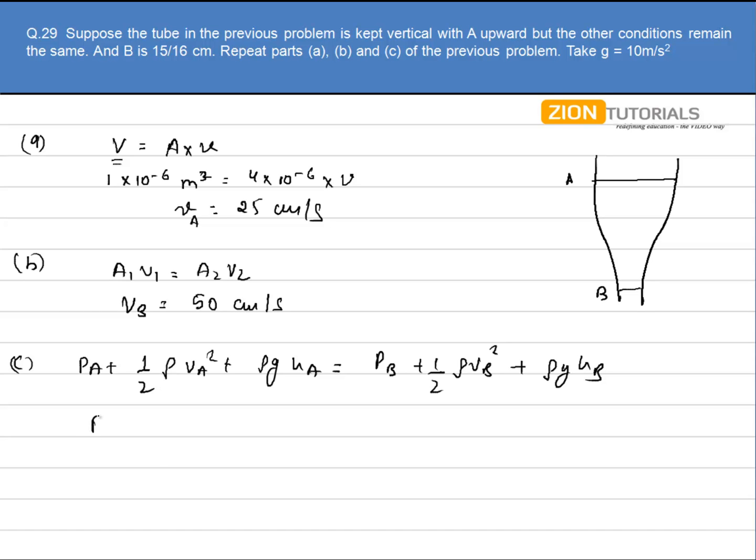Fine. I have to calculate pa minus pb, so I will calculate half rho (vb square minus va square) plus rho g (hb minus ha). Okay.